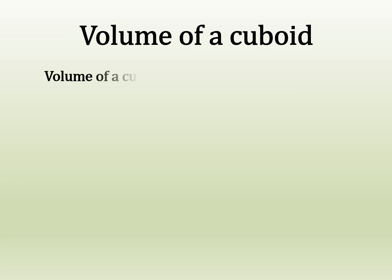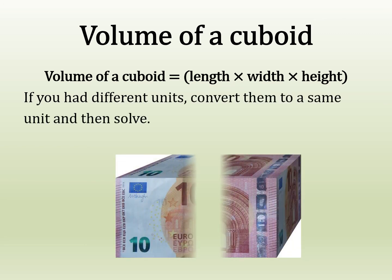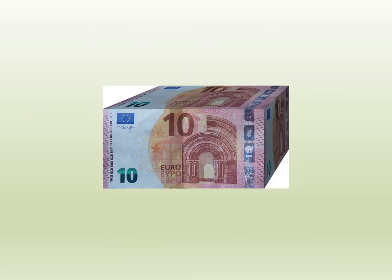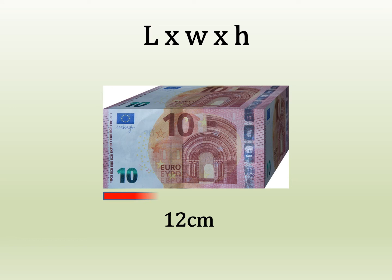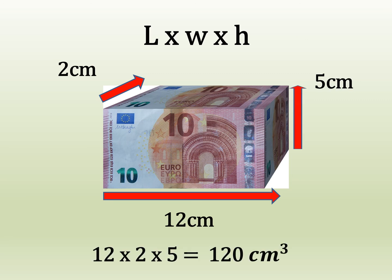For the volume of a cuboid, we use length times width times height. Note that if you have different units, you'll want to convert them all to the same before solving. So we have twelve times two times five, which gives 120 centimetres cubed.